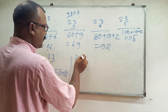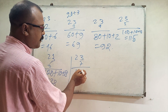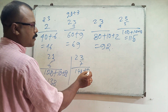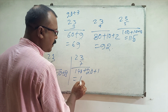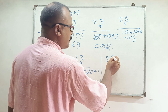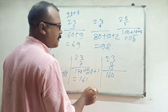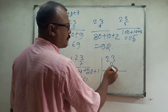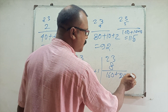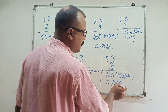23 sevens: 140 plus 21, so 161. 23 eights: 160 plus 24, so 184. 23 nines: 20 plus 4, so 184.